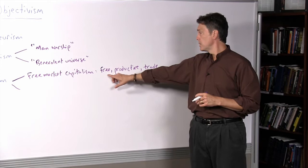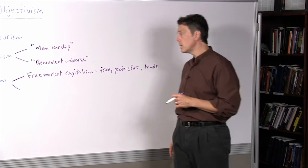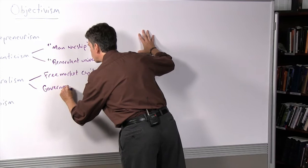Now of course, there are lots of people who don't respect other people's freedoms, who don't try to be very productive and who are not interested in trading with other people. And so Rand believes there is a proper role for government.